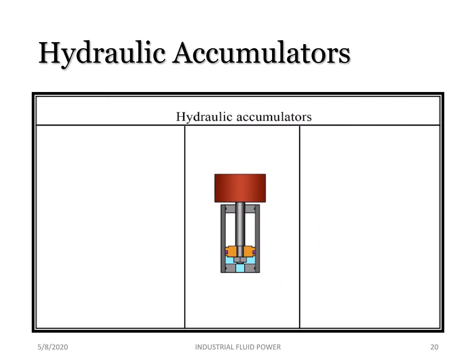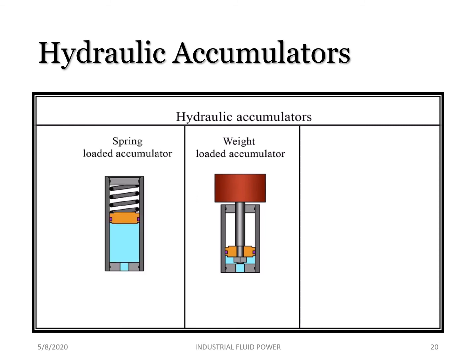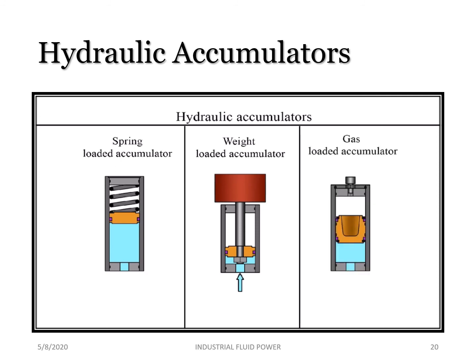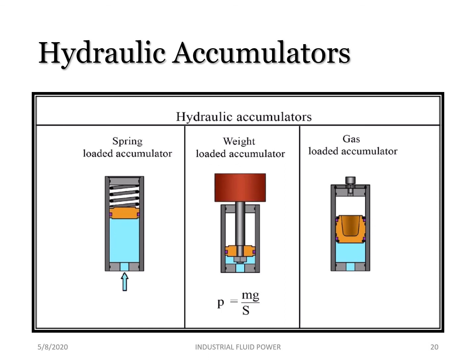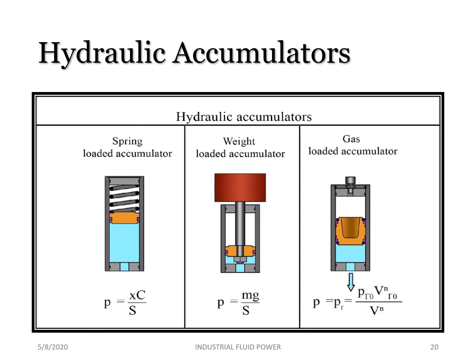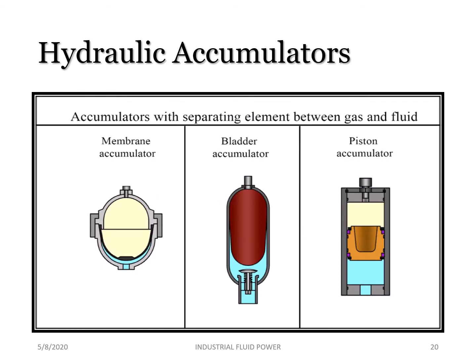There are three types of accumulators used in hydraulic systems: weight loaded, spring loaded, and gas loaded (hydro-pneumatic) accumulators. A balance is maintained between the pressure in the fluid and the opposing pressure produced by the weight, spring, or pressure created from the gas. The following types of accumulators with separating elements are used in industry: piston, membrane, balloon, or bladder accumulators — they differ in the way gas and liquid are separated.